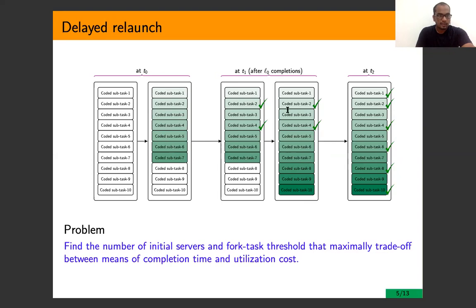The number of sub-tasks we need to complete before the forking point is called the forked task threshold. For our purpose, we focus on the service completion time when a fixed number of servers complete their tasks. We want to decide how the parameters — initial servers and forked threshold — should be chosen so that both metrics, completion time and utilization cost, are optimized.